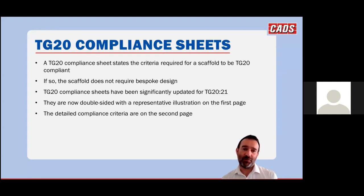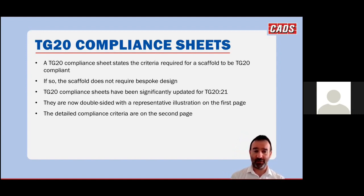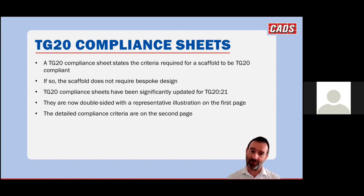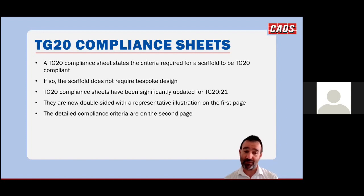The next part is the TG20 compliant sheets. TG20 has a wide range of scaffolds that are compliant and therefore designed by calculation. The compliant sheets summarise the principal design criteria your scaffold must meet in order to be compliant. They've been significantly updated for TG2021 — they're now double-sided with an illustration on the first page, much clearer compliance criteria, and all the details on the back page.